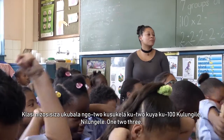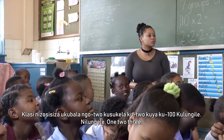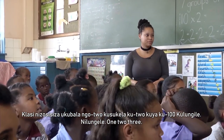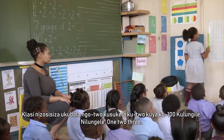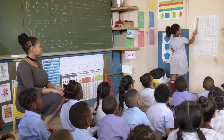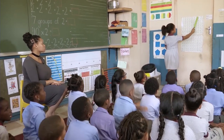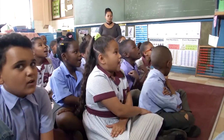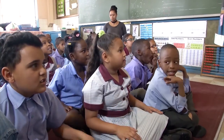Kazen, you're going to help us count in twos from two to one hundred. Ready? 2, 4, 6, 8, 10, 12, 14, 16, 18, 20.